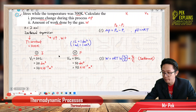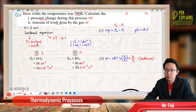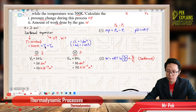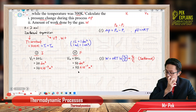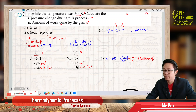Since this is an isothermal process, temperature is constant. That means T1 equals T2, both equal to 300 Kelvin. We already have the temperature, and the number of moles is also given as n = 2 mol. So we just need to find the pressures.